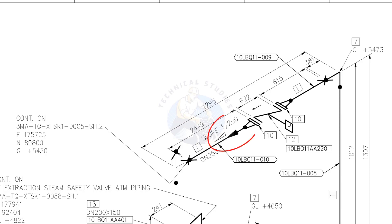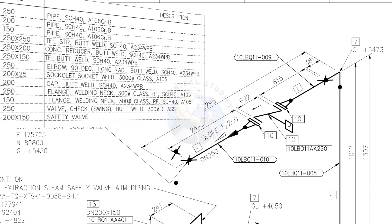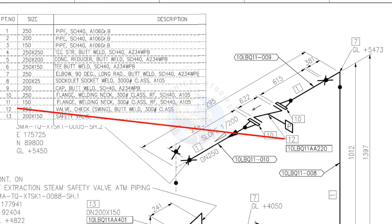Slope 1 to 200 means the pipe is sloped 1 millimeter for every 200 millimeters. Consider a pipe with 1000 millimeters length — that means the pipe has a 5 millimeters slope. Compare these two levels. Item number 12 is a check valve. Check valves have a flow direction mark on them. You can see the flow direction of this piping — before installing the valve, make sure the flow direction is as shown on the drawing.